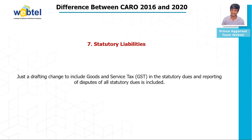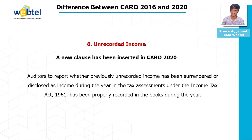Clause seven is Statutory Dues. There is a drafting change to include GST in the statutory dues, and reporting of disputes of all statutory dues is included. Clause eight is Unrecorded Income — a new clause inserted in CARO 2020. The auditor is required to report whether previously unrecorded income has been surrendered or disclosed as income during the year in the tax assessment under the Income Tax Act 1961 and has been properly recorded in the books during the year.